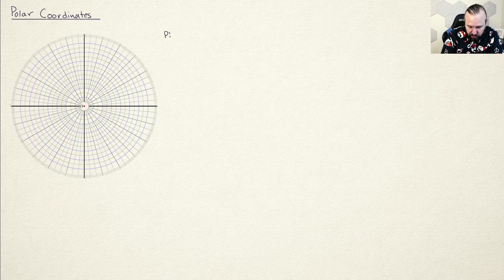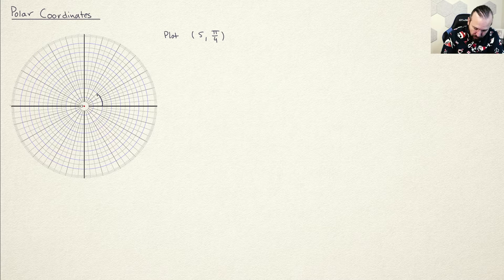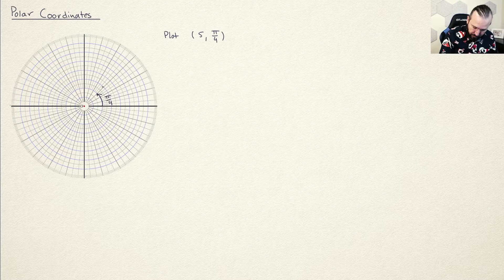If you give me a radius and an angle, I can use the polar plane to describe the location of a point. Let's plot some basic points. Let's plot 5 comma pi over 4. What I need to do is open out an angle to pi over 4, and then go out 5 units of radius — 1, 2, 3, 4, 5. That right there is the point 5 comma pi over 4.